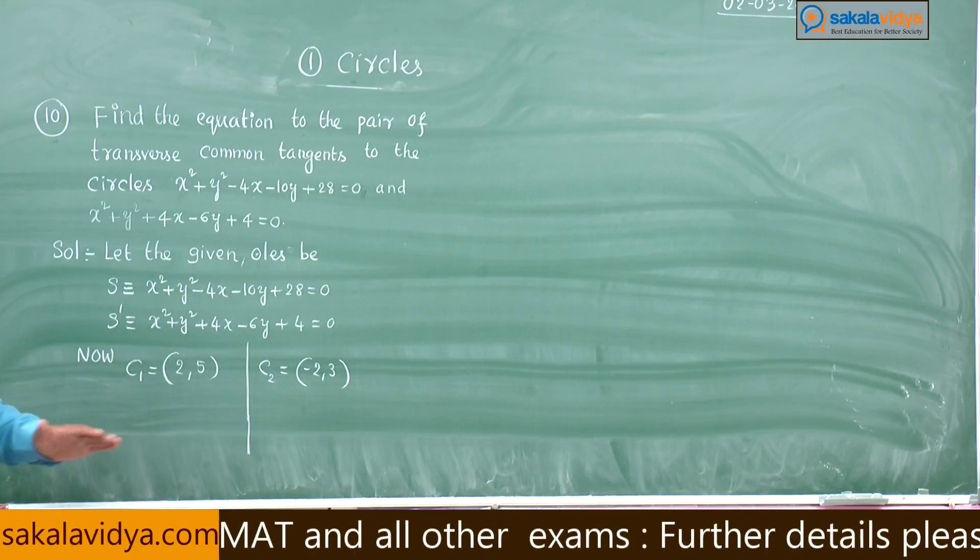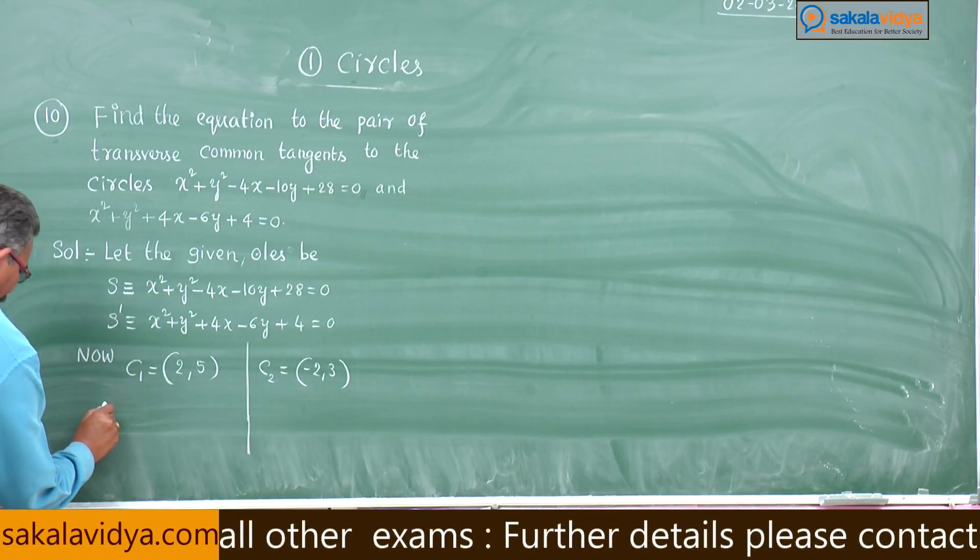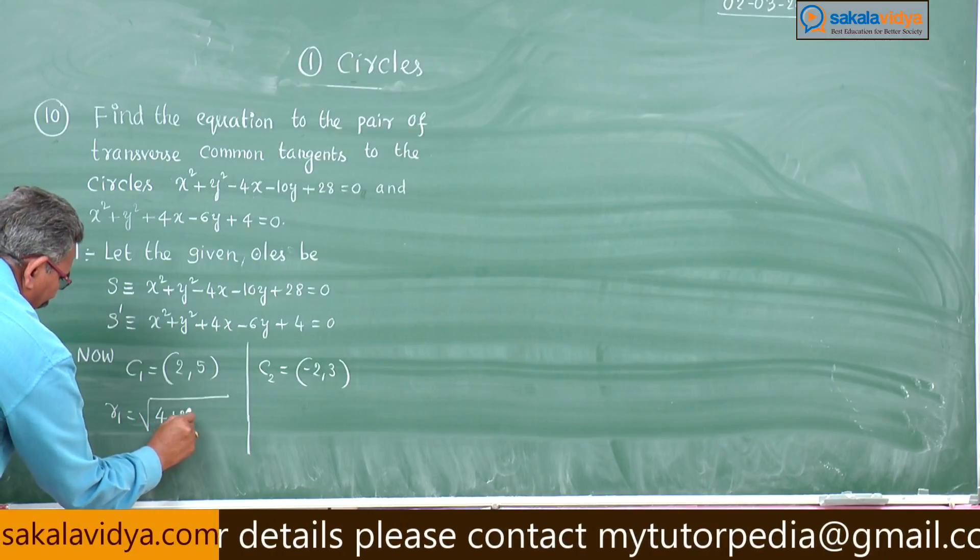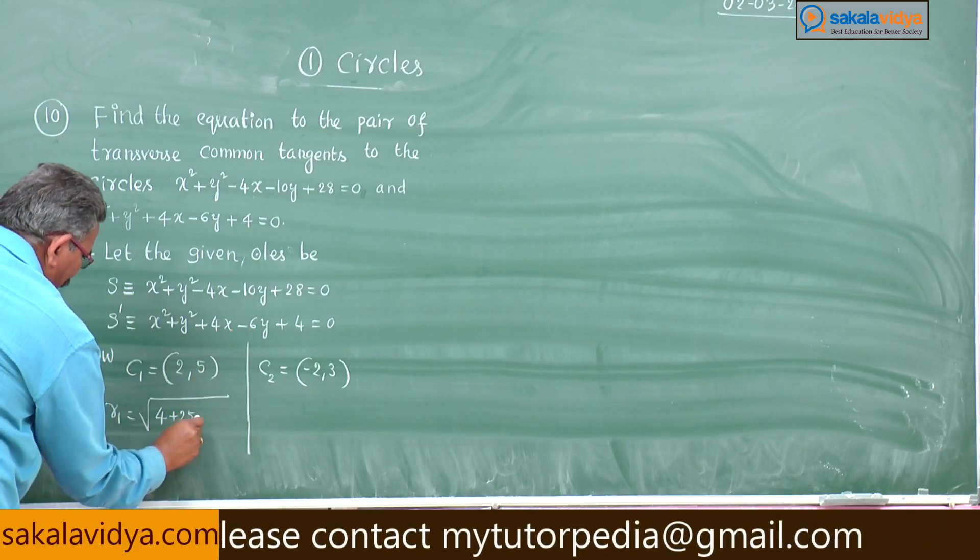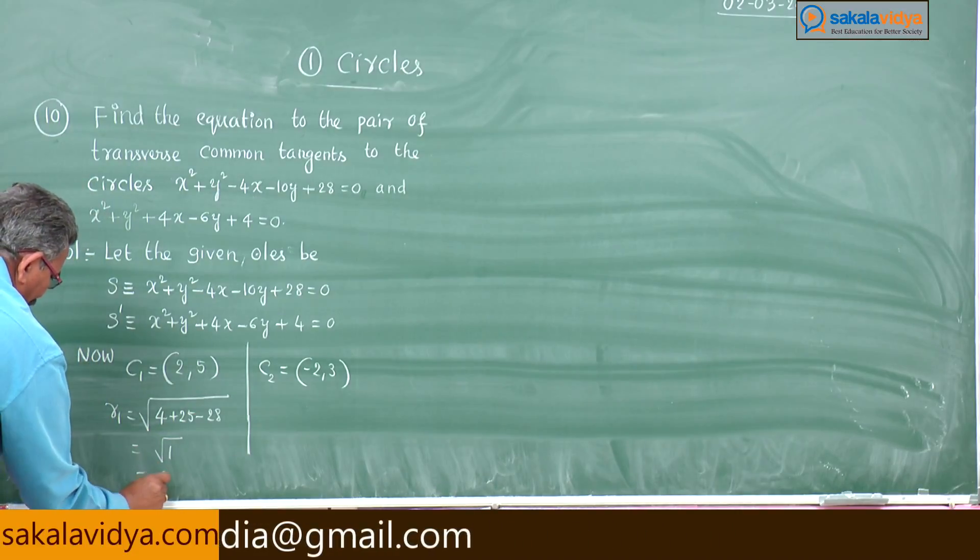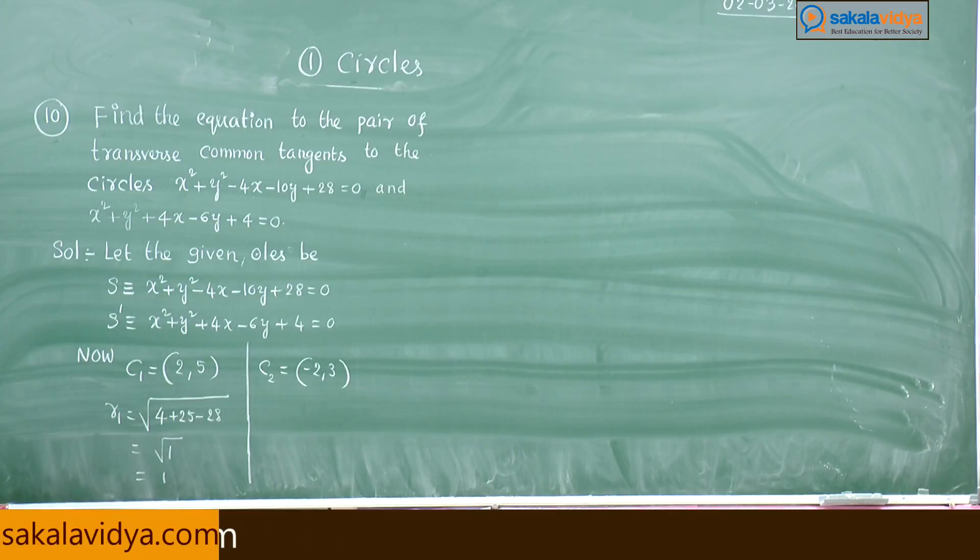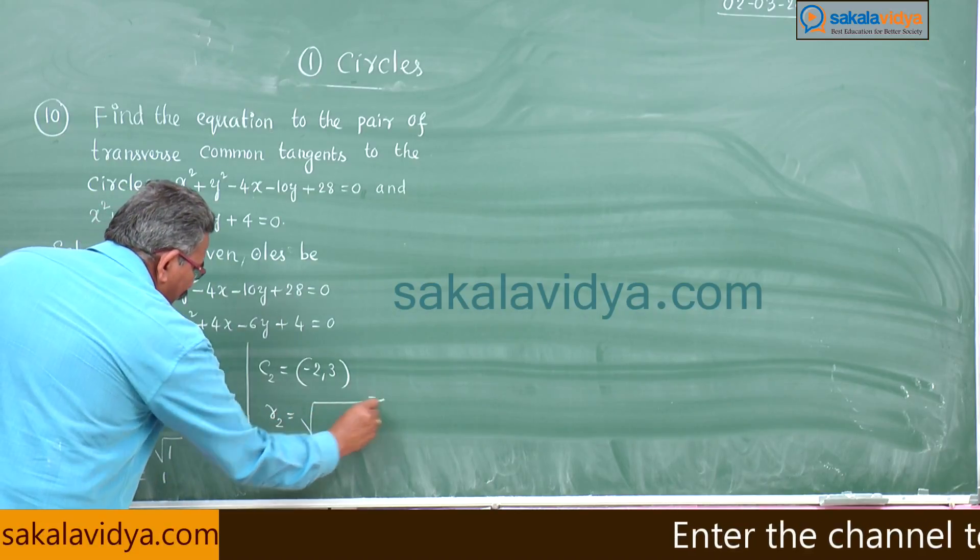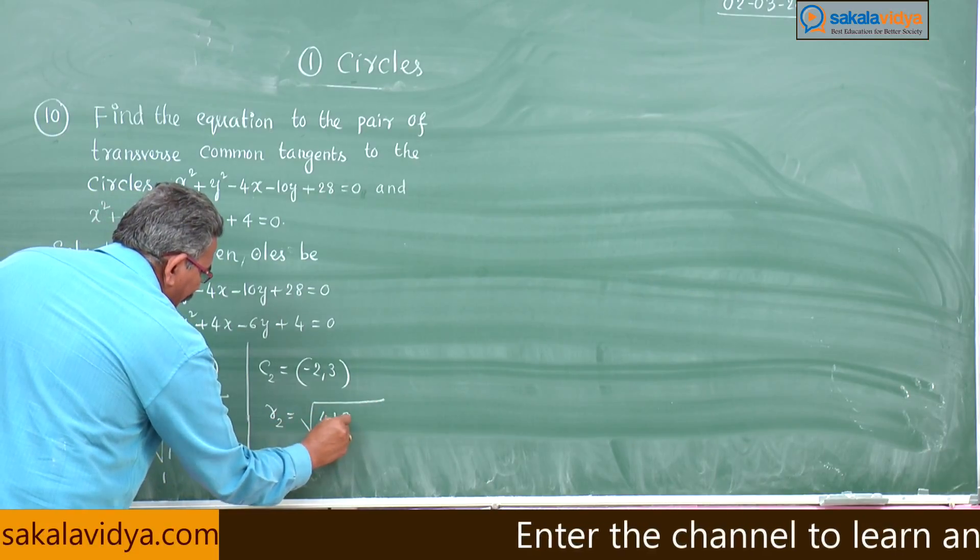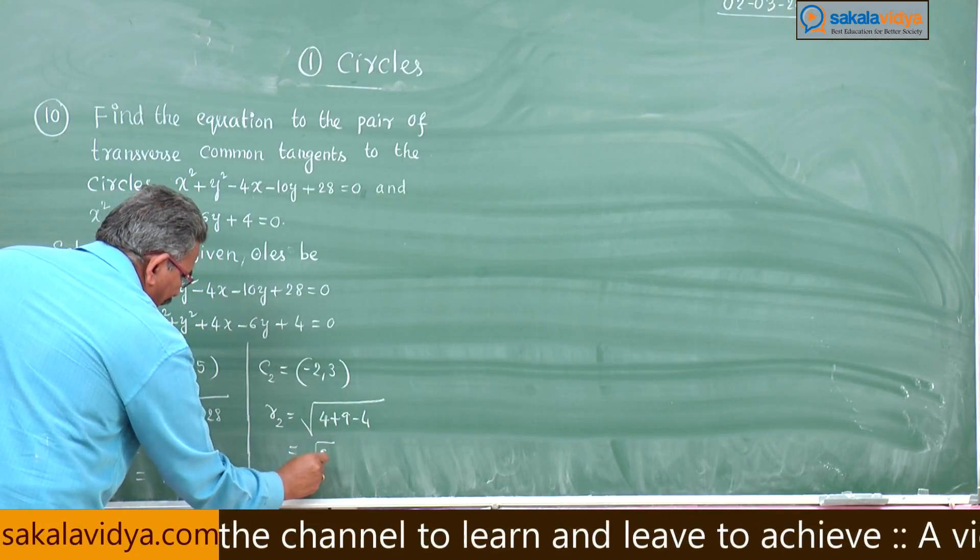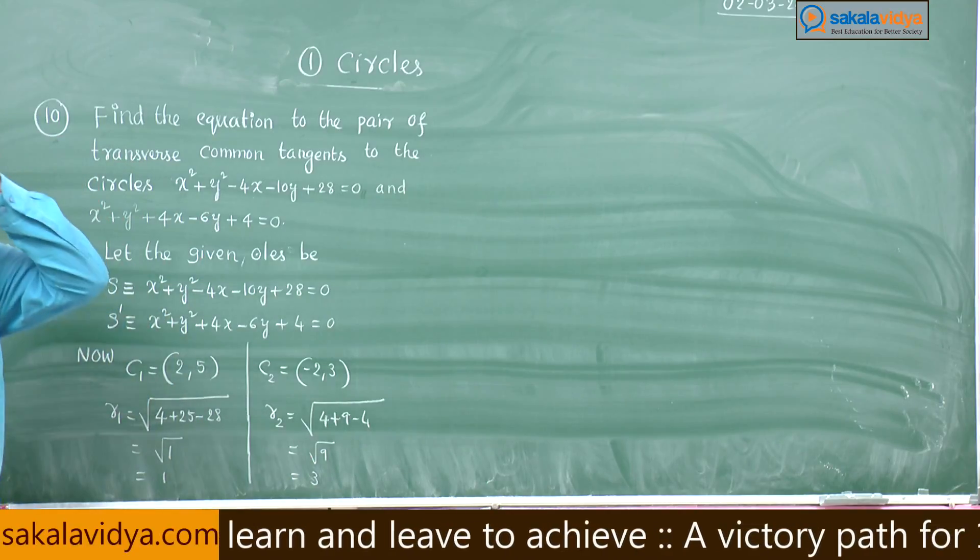Now C₁, center of the first circle is (2, 5). C₂ = (-2, 3). Now let us come to the radius. R₁ is √(4 + 25 - 28). 29 - 28 is 1, √1 is 1. Now R₂, this is √(4 + 9 - 4). 13 - 4 is 9, that is 3.